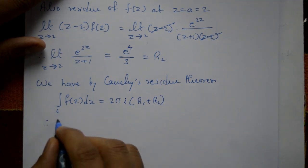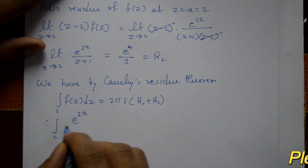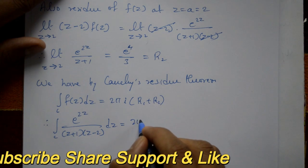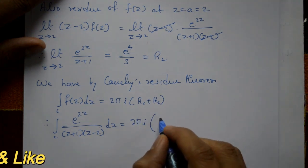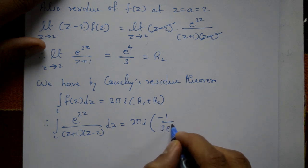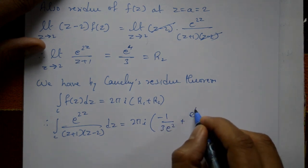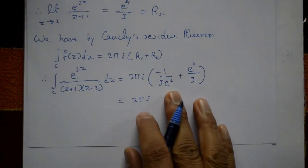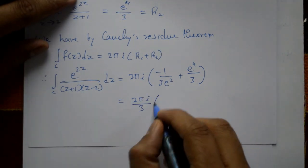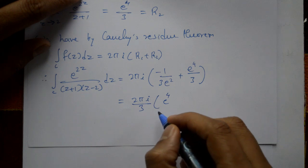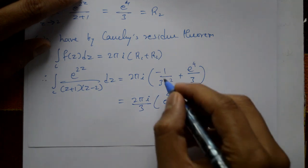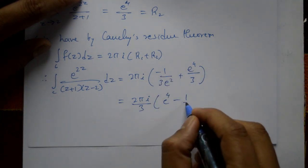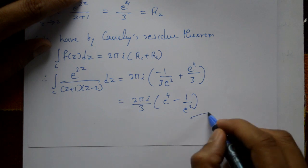Therefore, the integral of e^(2z) / [(z+1)(z-2)] dz equals 2πi · (-1/3 · e² + e⁴/3). Taking 1/3 as a common factor, this equals 2πi · (1/3) · (e⁴ - e²). This is the required solution.